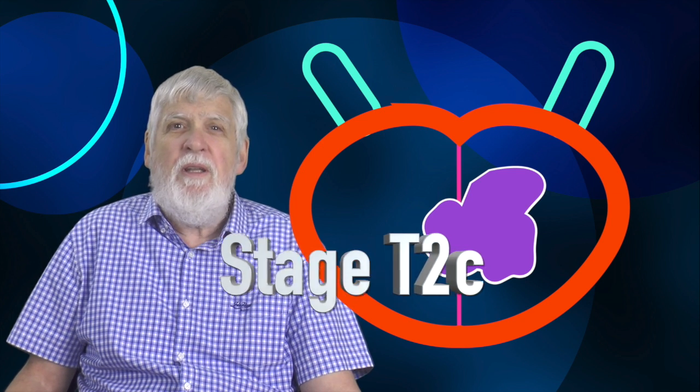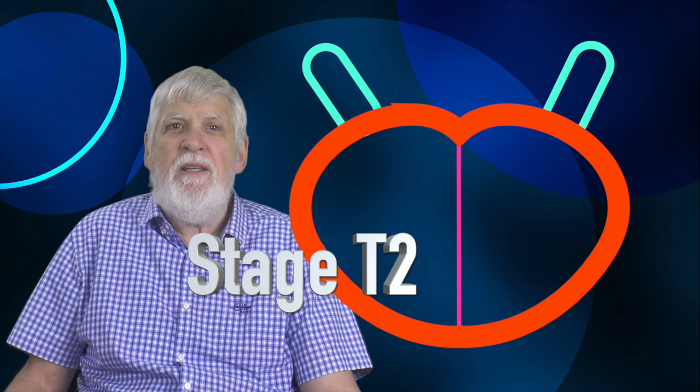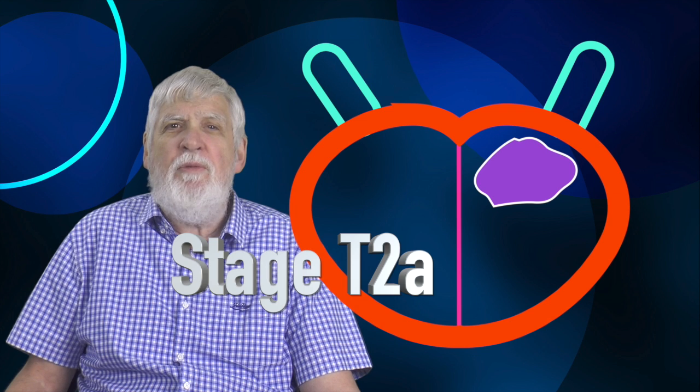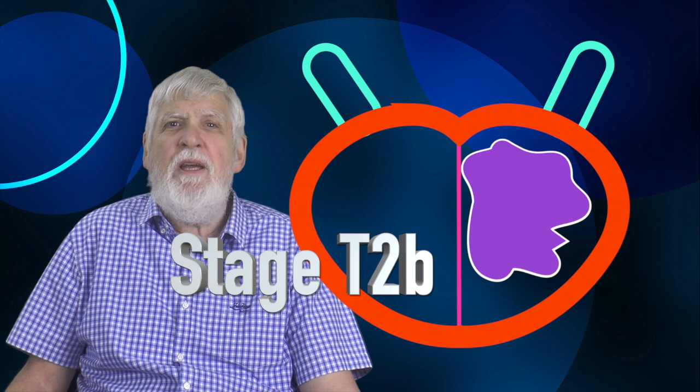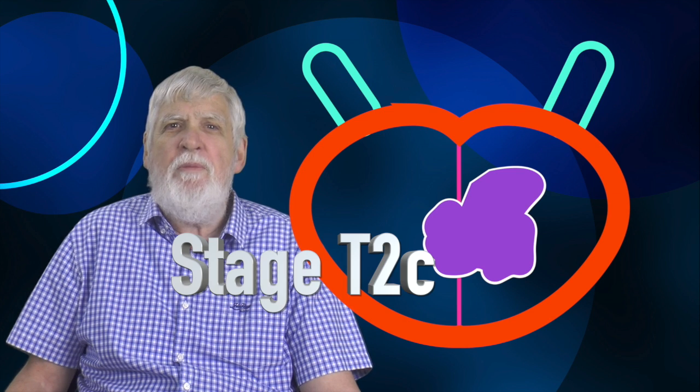So, the key thing about T2 cancers is that they are completely confined within the prostate. T2A less than half of one lobe, T2B more than half of one lobe, T2C both lobes.